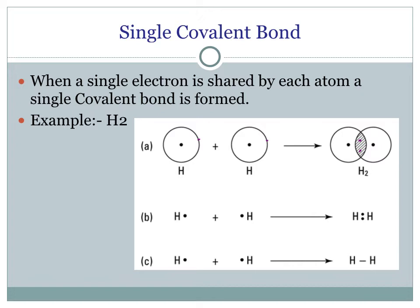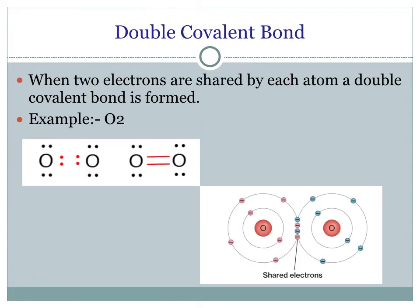Each hydrogen atom contributes one electron to form a common shared pair; by doing so, both of them complete the duplet and attain stable electronic configuration. See the figure — there are three ways shown: A, B, and C. The single bond between two hydrogen atoms shows that there are two electrons shared between the two hydrogen atoms. Now let us study double covalent bond. When two electrons are shared by each atom, a double covalent bond is formed.